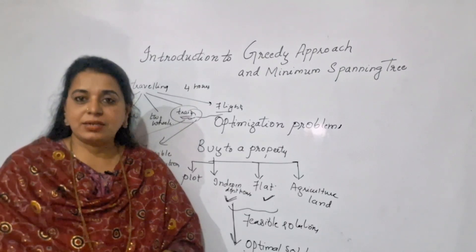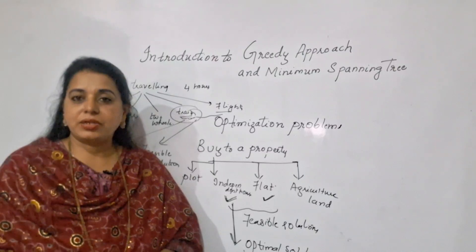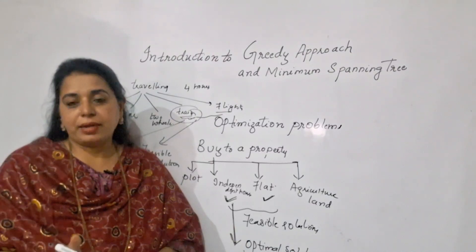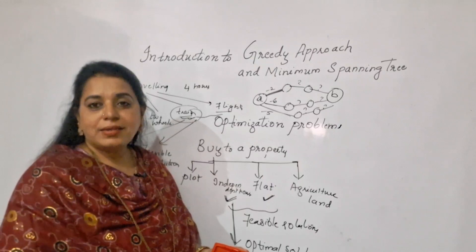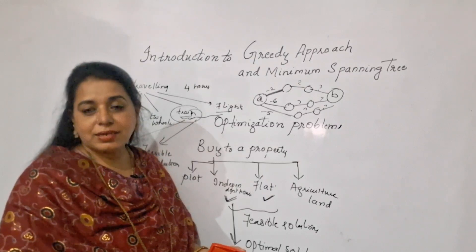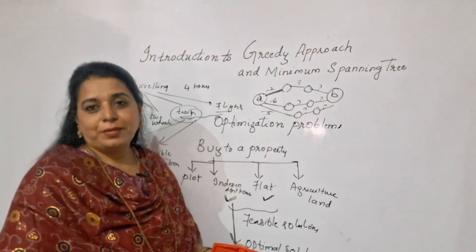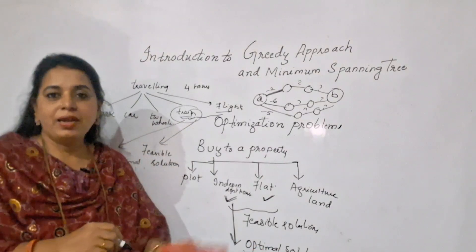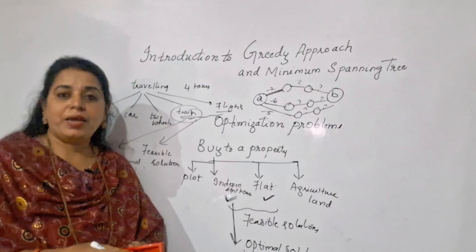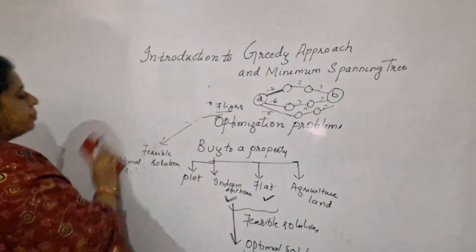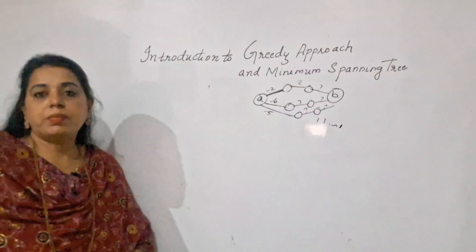The greedy approach takes decisions at every stage, selecting the most suitable option at each particular point. The algorithms that make use of this greedy approach are Prim's algorithm, Kruskal's algorithm, and Dijkstra's algorithm. You should also know what a spanning tree means, because Prim's and Kruskal's algorithms are used to determine the minimum spanning tree.